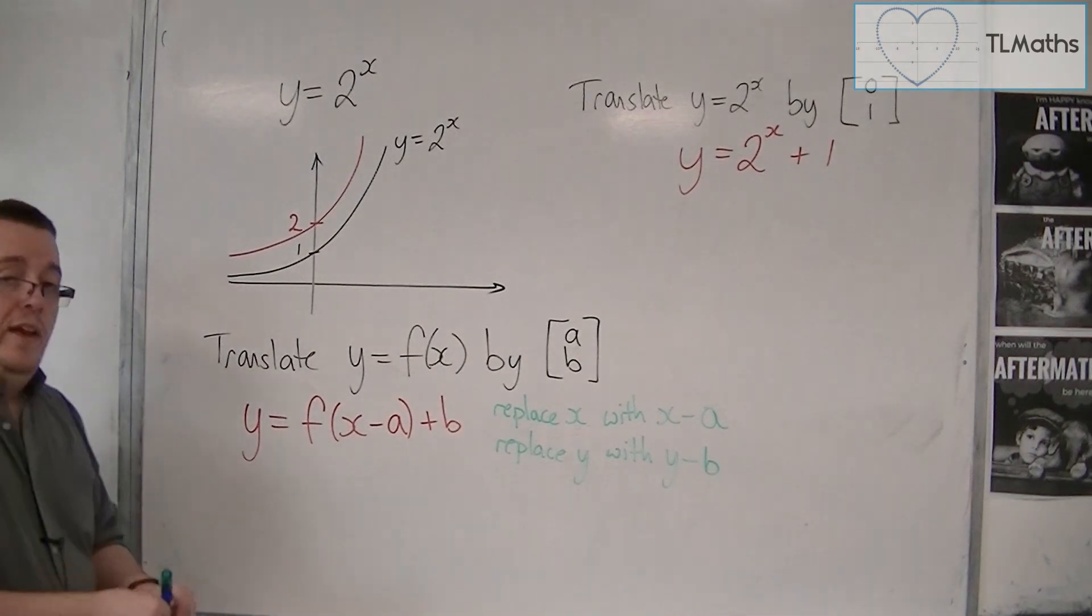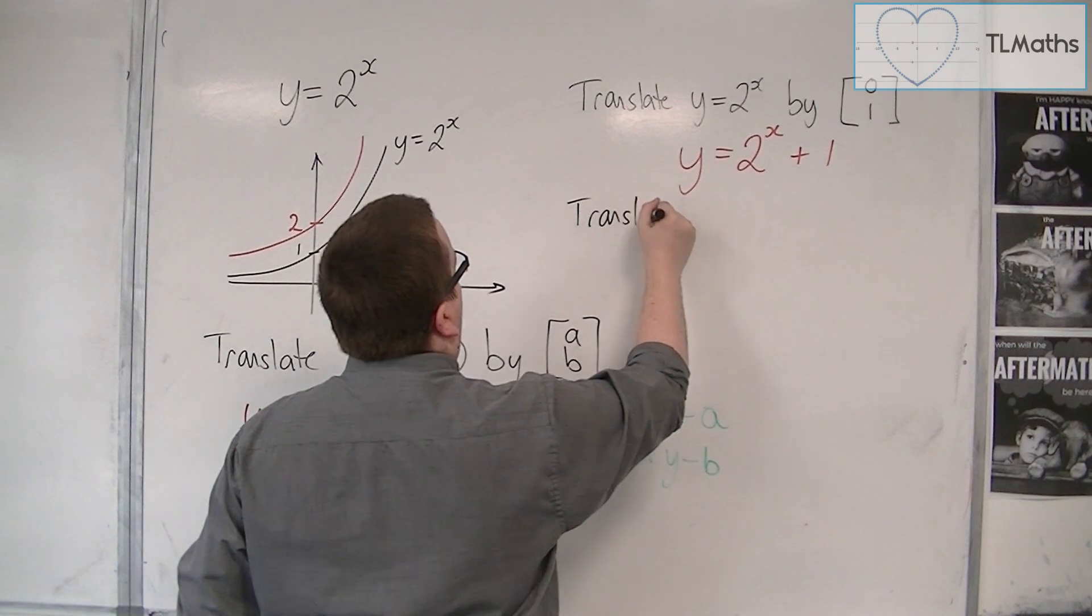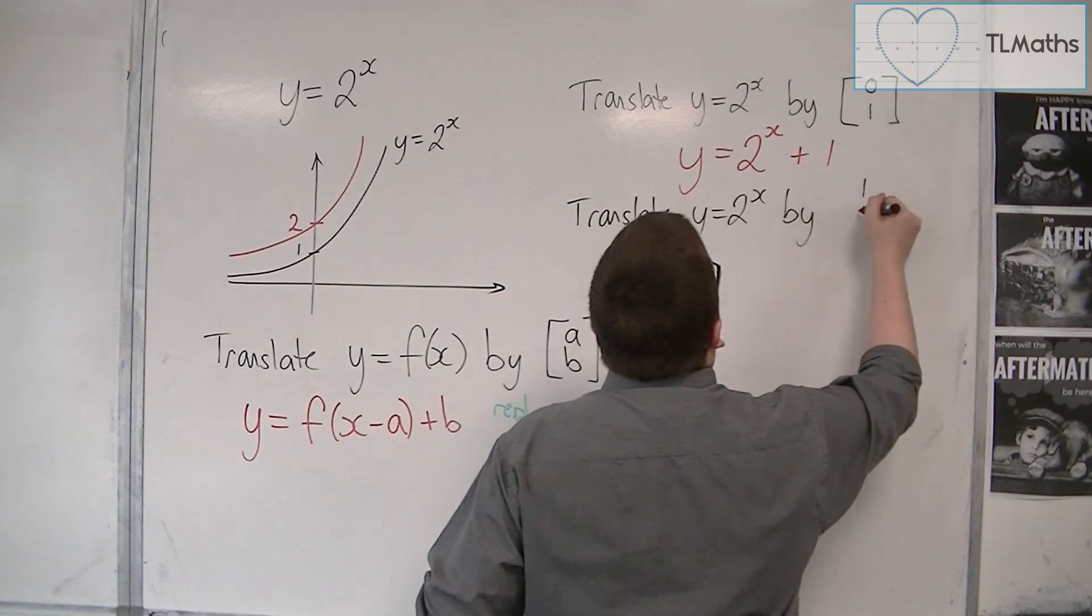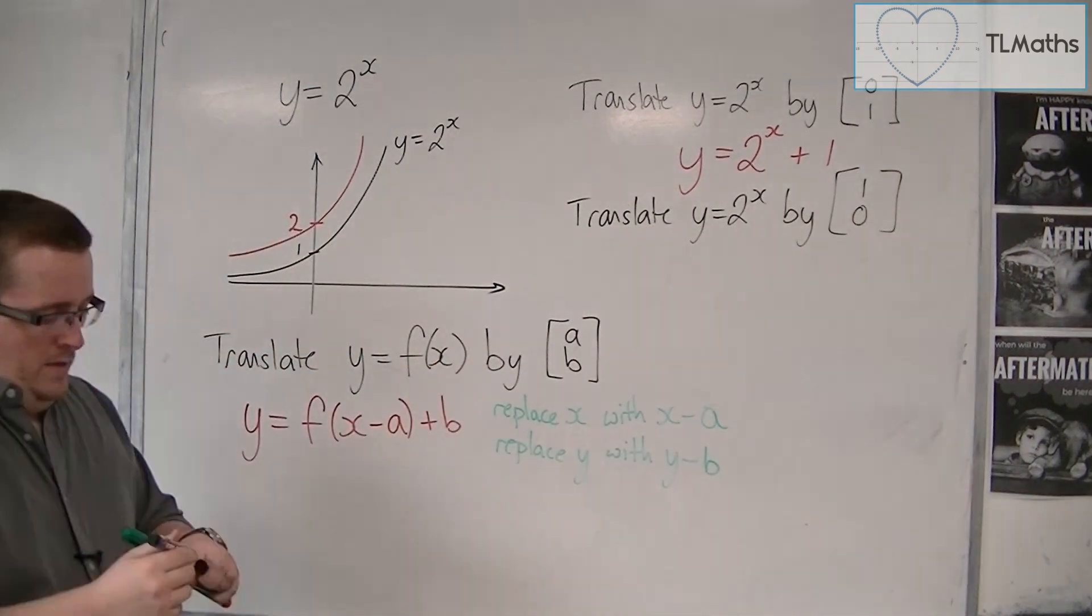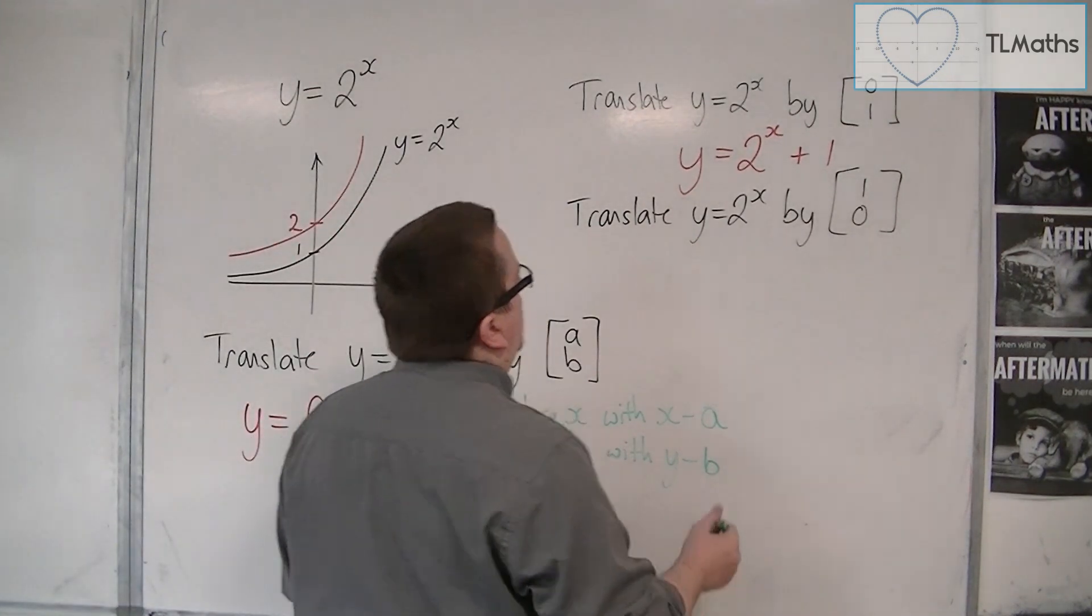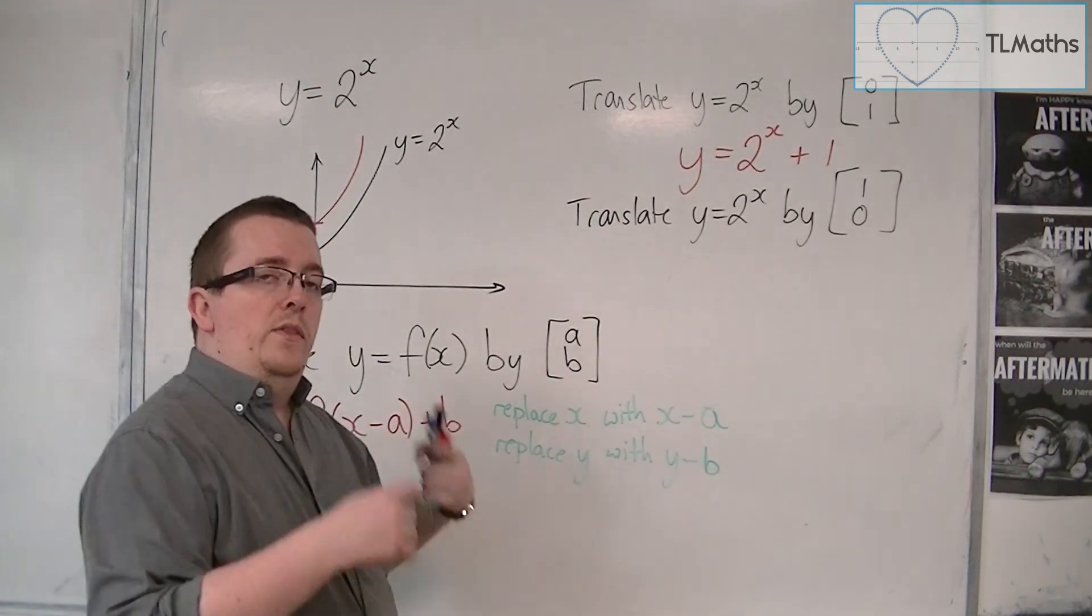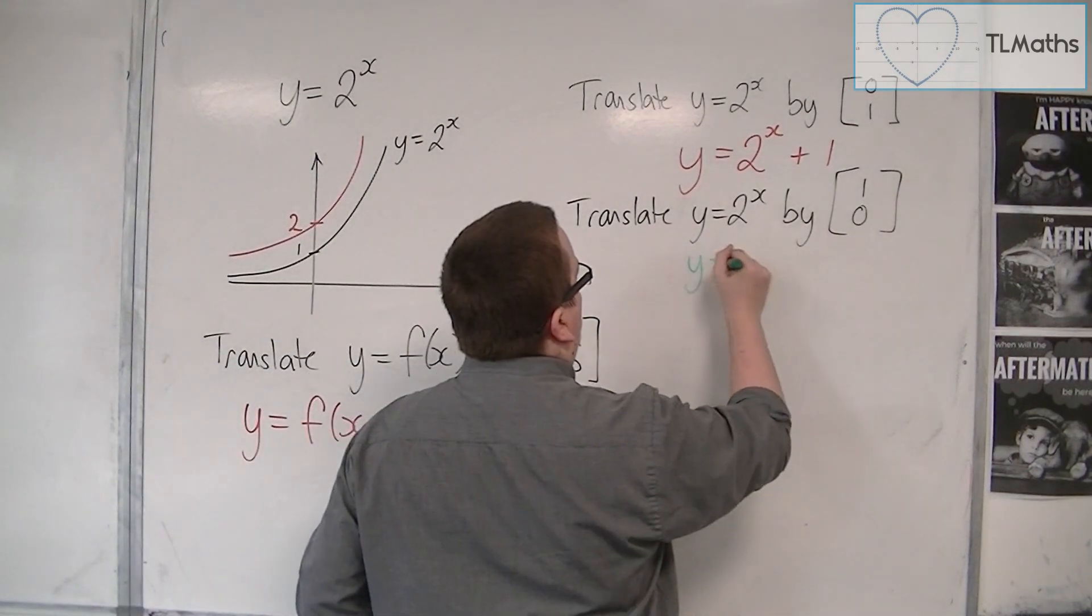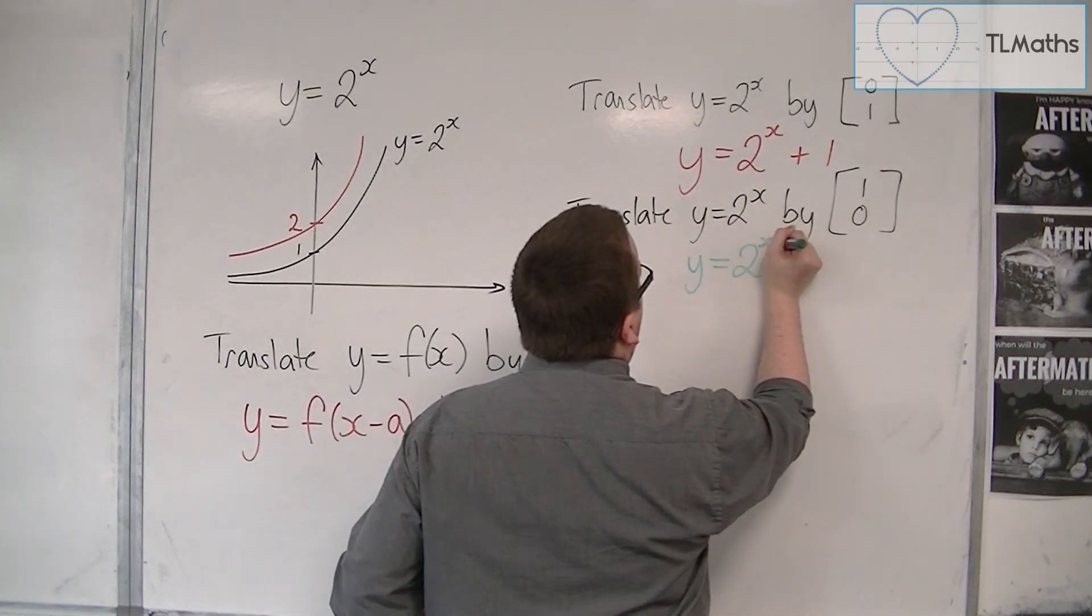So, let's say that now I want to translate this curve. So, translate y equals 2 to the x, this time by 1, 0. Now, if I translate it by 1, 0, then I am replacing the x with x minus 1 and the y with y minus 0. So, the y doesn't change, but the x does because it's now 2 to the x minus 1.